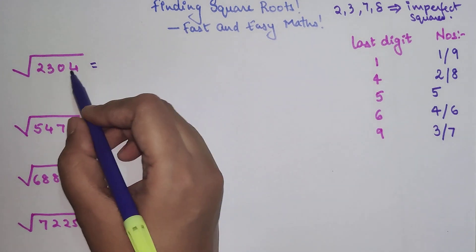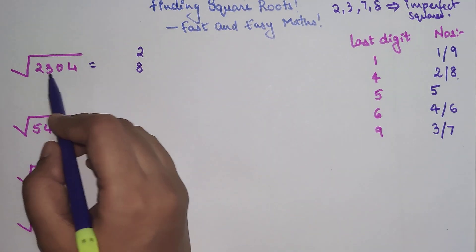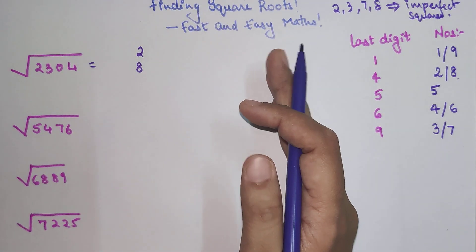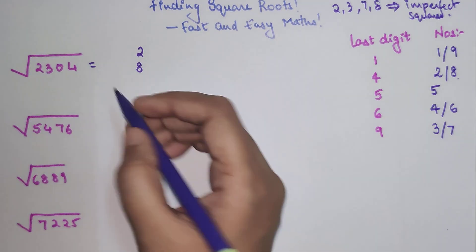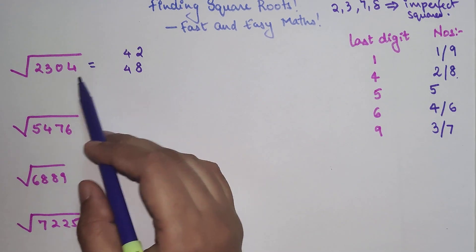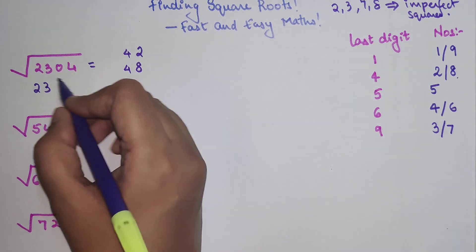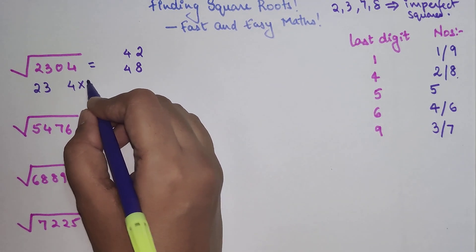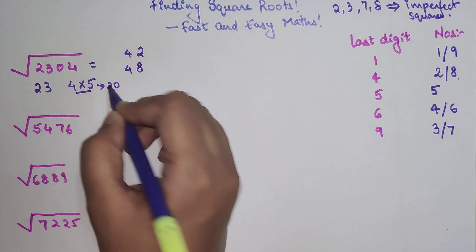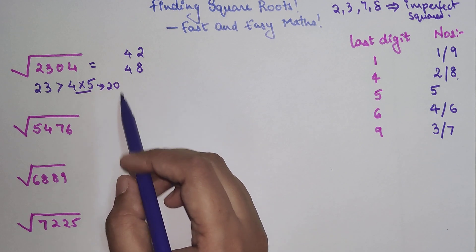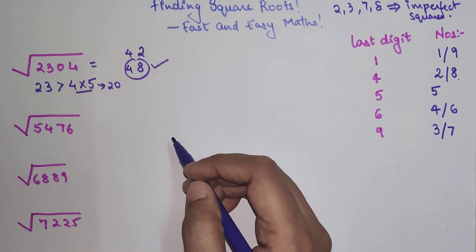Let's find the square root of 2304. The last digit is 4, so the possible unit digits are 2 or 8. Now striking out the last two digits, we have 23. The nearest perfect square below 23 is 16, which is 4². So our answer is either 42 or 48. We write 23 and compare: 4×5=20. Since 23 is greater than 20, we pick the greater value, so the answer is 48.